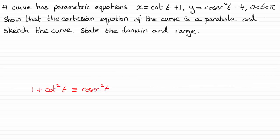So if we take our parametric equations x equals cot t plus 1 and y equals cosec squared t minus 4, then what I can do is make cot t the subject from this one. So cot t is going to equal x minus 1. And I can make cosec squared t the subject from this parametric equation.